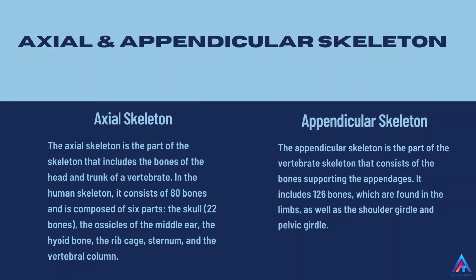What are the axial and appendicular skeletal systems? The axial skeletal system basically consists of the bones in the skull, vertebral column, sternum and the ribs. There are totally 80 bones in the axial skeletal system. The appendicular skeletal system has 126 bones, which is composed of the bones in the upper and the lower limbs including the pelvic girdle.